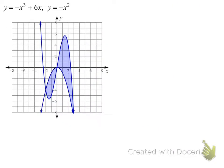For this second region, the upper function is the cubic and the bottom is the parabola. The bounds of integration are from 0 to 3. My upper function is -x³ + 6x, and my lower function is -x². So upper minus lower gives the integrand.